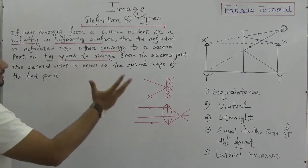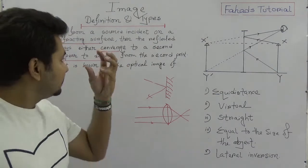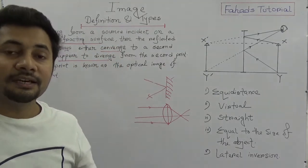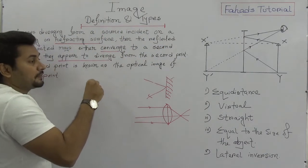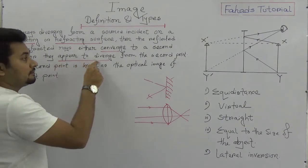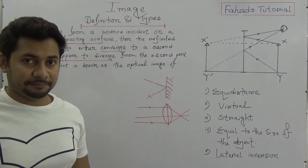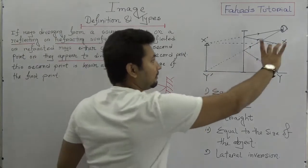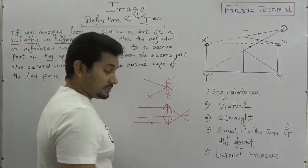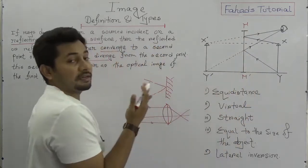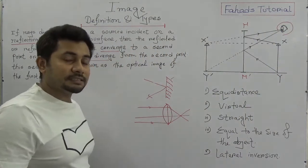So here it becomes a bigger definition. The concept is actually inside it, because the definition itself explains the types — the reflected rays either converge to a second point, or they appear to diverge from the second point. What is the meaning of 'appearing to diverge from'? Think about this.